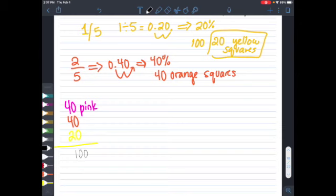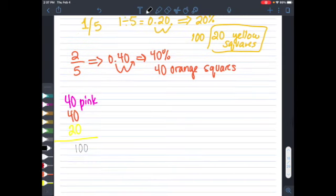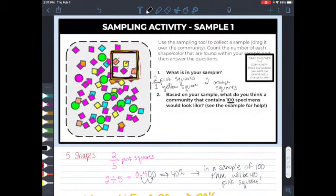Now there is a problem with this sample, because this sample says we're going to have 40 pink squares, 40 orange squares, and 20 yellow squares, and nothing else. But when we look at our population up here, we can see we have green circles, we have blue squares, we have a pink circle. All of that is not accounted for because our sample simply isn't large enough.